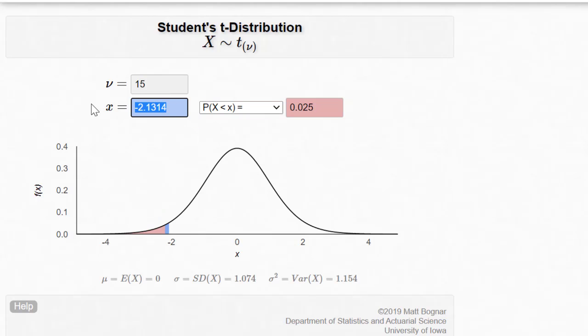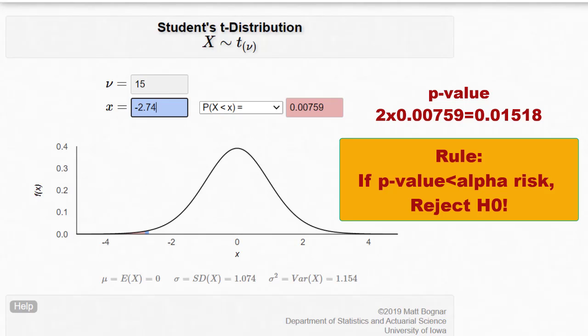Now I put value of calculated T statistic which was minus 2.74 and it will show you area to the left of this value in the tails and that area is 0.00759. Equal area will be to the right of plus 2.74. So if you double this area 0.00759, that value is called the p-value and that is 0.01518 in this case.